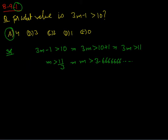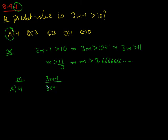The second method is using the answer choices. Each answer choice gives us a possible value of m. If we take m equals 4, then 3m minus 1 equals 3 times 4 minus 1, which is 12 minus 1 equals 11. That is more than 10, so it works.